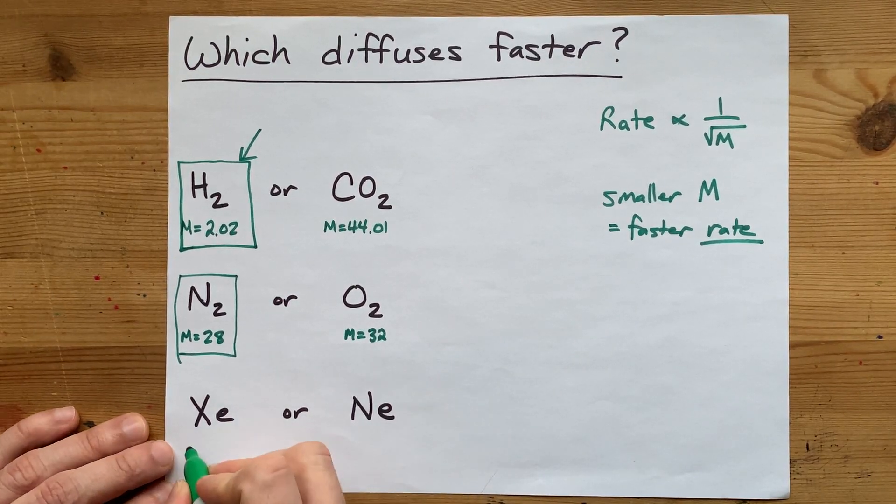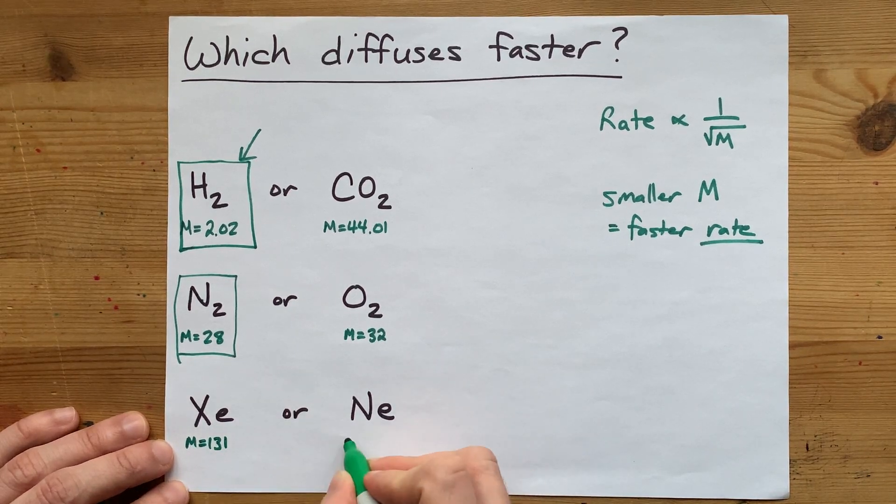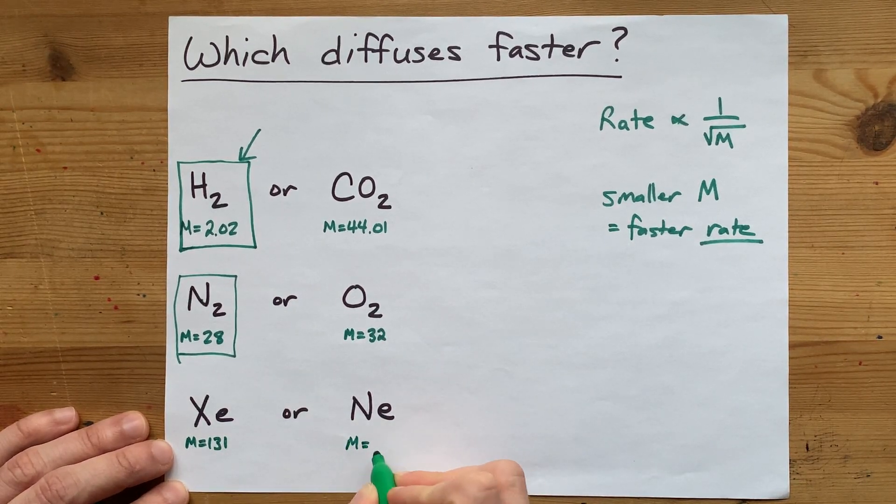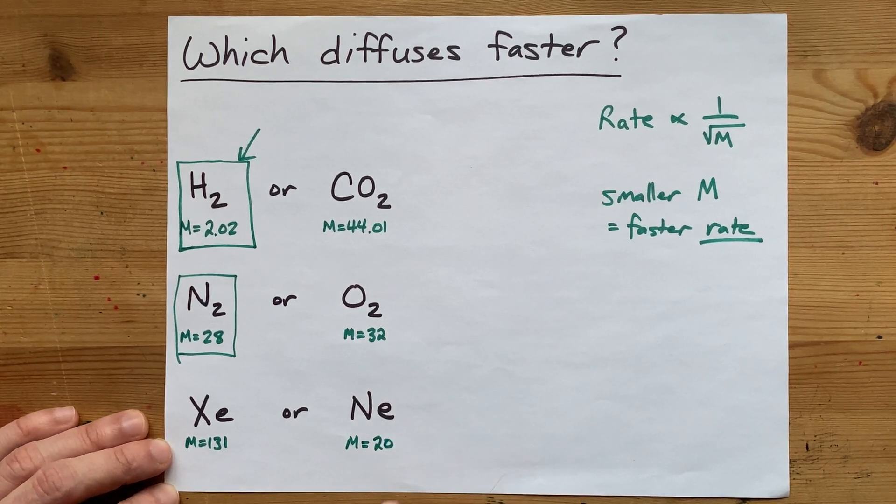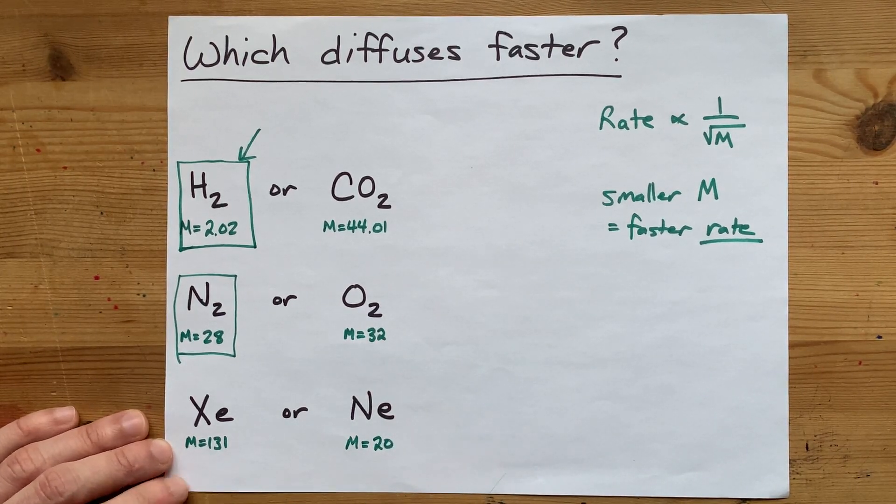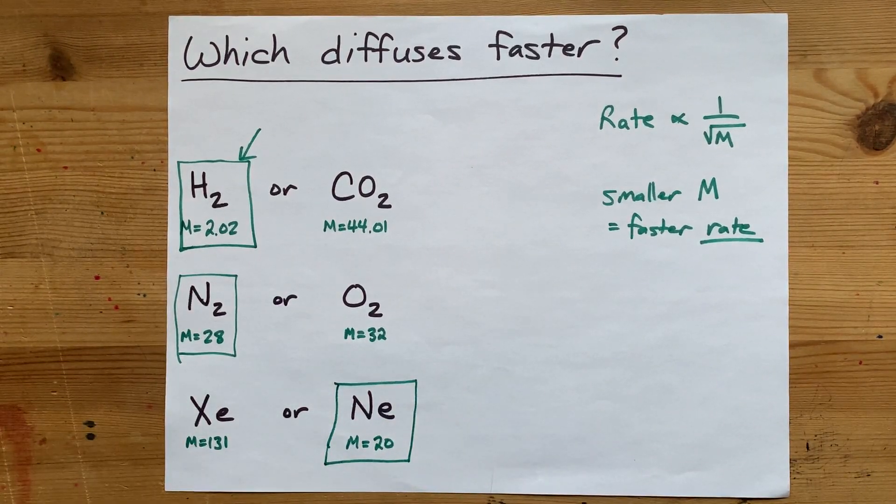Xenon, if you look it up, is I think it's 131. And neon, I honestly don't remember. I think it's probably around 20. Don't quote me on that, but it's much smaller than 131. So of xenon and neon, it's neon that diffuses faster.